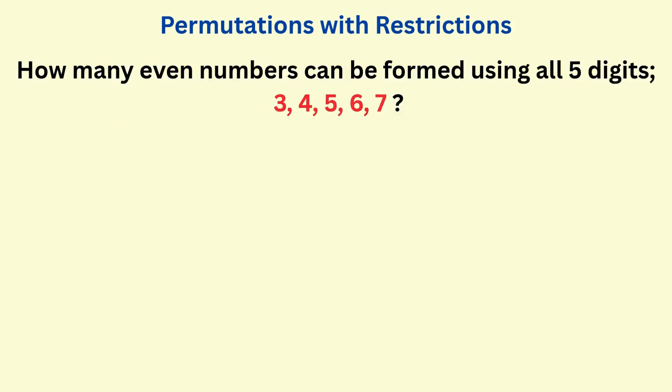Let's try a different problem. How many even numbers can be formed using all five digits below? A number is even if it ends with an even digit. From the set of numbers given, the even digits are 4 and 6.